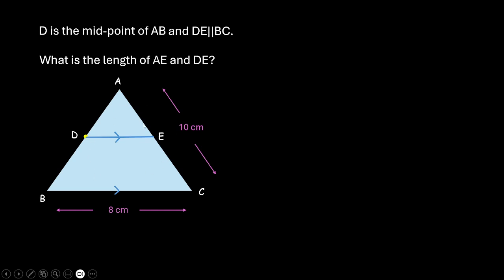Looking at what all is given to us, let us see. We are given one midpoint and one set of parallel lines. Aren't these the conditions which we kind of saw in midpoint theorem?